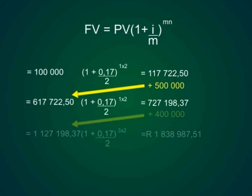To that he adds 400,000 which gives me an amount of 1,127,198 Rand and 37 cents. That amount is going to be invested for 3 years. The reason that is is because between the second year from now and 5 years from now he does not add or subtract anything from his investment so we just work it out over a 3 year period. So that will be 1,127,198.37 open bracket 1 plus 0.17 over 2 close bracket to the power 3 times 2 which gives me an answer of 1,838,987 Rand and 51 cents.